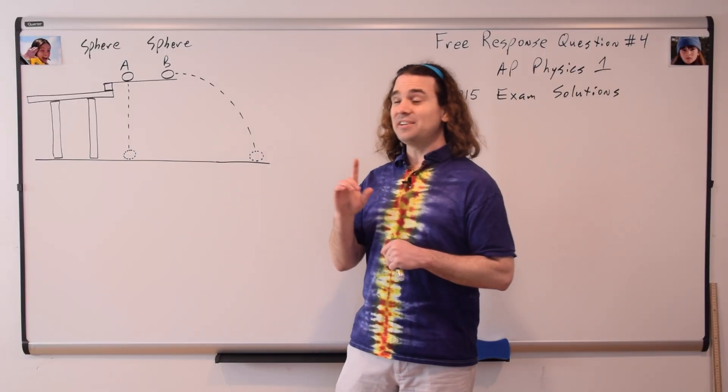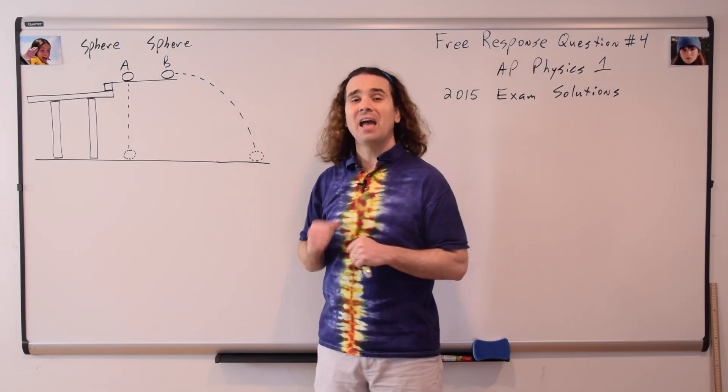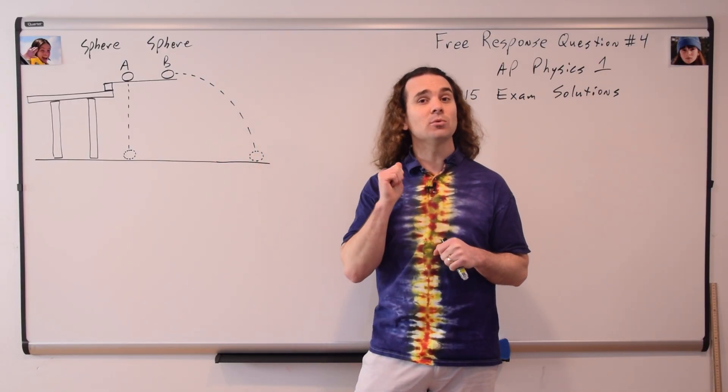Alright, we have two identical spheres, A and B, which are released from the same height, capital H, at the same time, t equals zero.